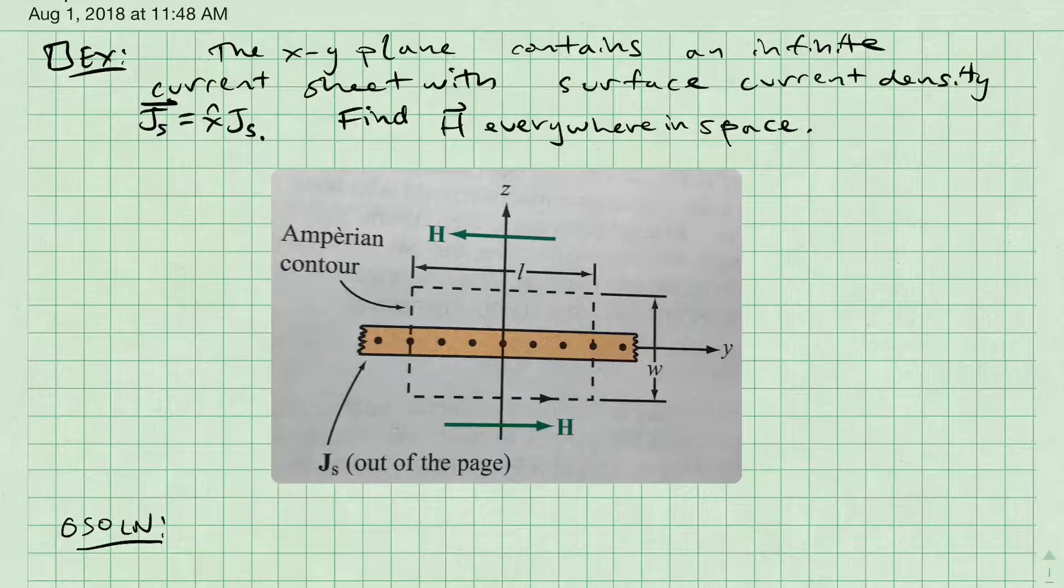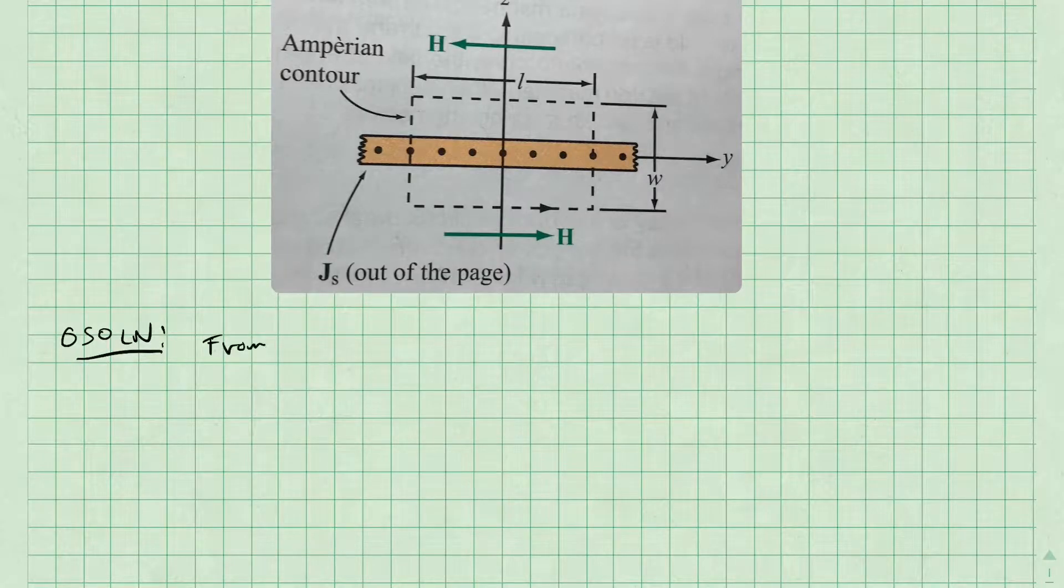Let's look at an example. In this example, the xy-plane contains an infinite current sheet with surface current density Js vector equal to x-hat Js. I want to find the magnetic field intensity H everywhere in space, and I've provided this illustration courtesy of the Ulaby textbook to help us see what's going on.